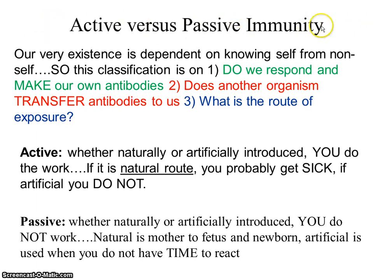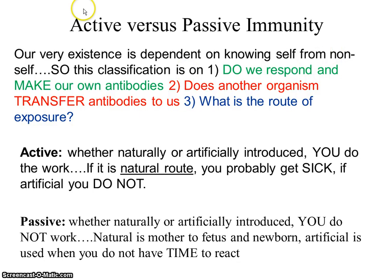Active versus passive immunity. Active implies you're doing something. Passive means something is being done for you. This has to do with the B and T cells being active in you. Often we refer to it as antibodies, but here we'll talk about making your antibodies or not making antibodies in active and passive.